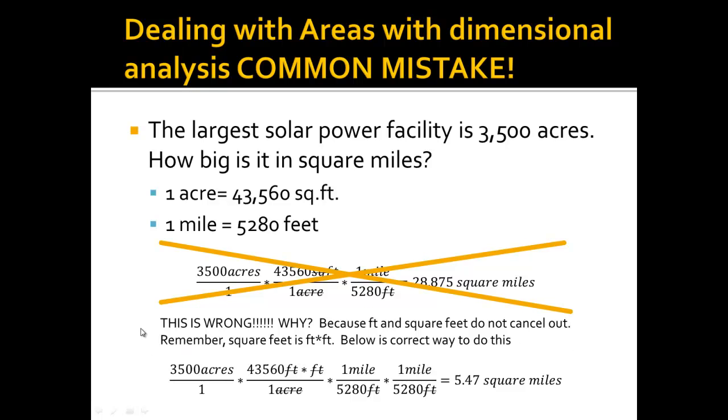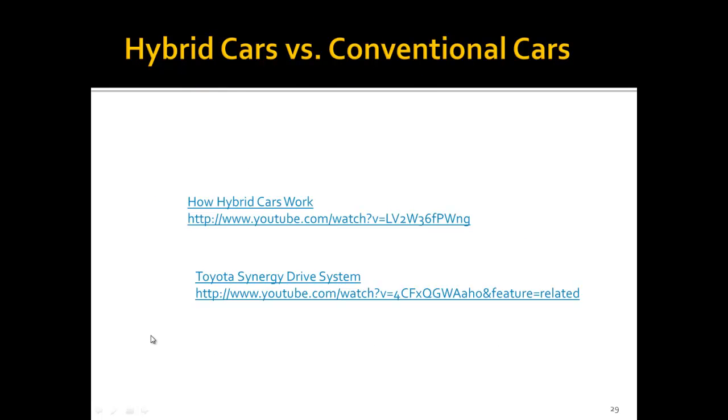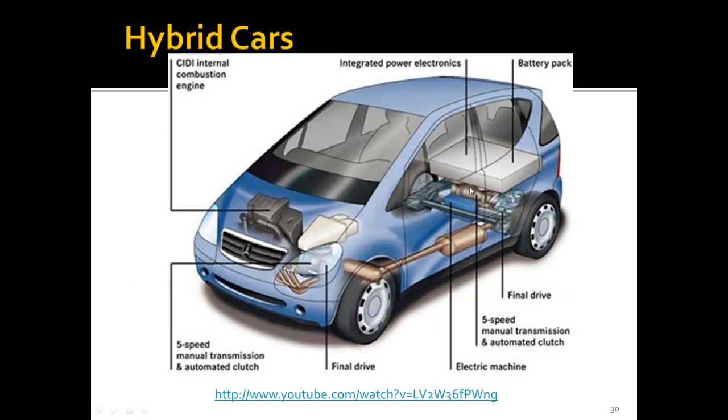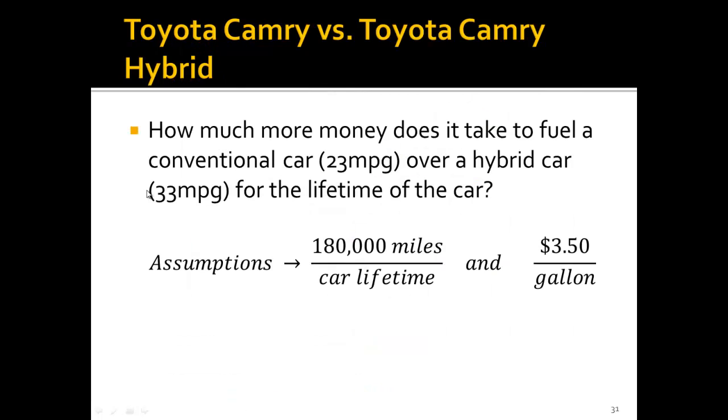I want to go over another example for unit conversion just to show you that it can be some real-world problems. And we're going to do hybrid cars versus conventional cars. I'm not going to go over how they work, but I posted some cool videos here. If you want to take a look, this presentation will be posted on Blackboard. The basic idea about hybrid cars is that they have higher miles per gallon. So what we're going to do is a little problem. How much more money does it take to fuel a conventional car, 23 miles per gallon, over a hybrid car, 33 miles per gallon, for the lifetime of the car?